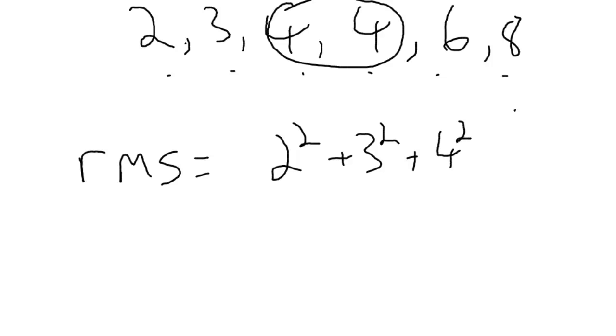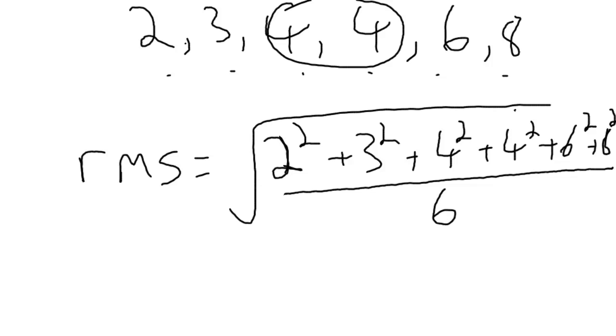So, 2 squared plus 3 squared plus 4 squared plus 4 squared plus 6 squared plus 8 squared. And then you divide by the number of values, so you add all those up. You add up all the squares, divide by the number, which is 6, and then take the square root. And if you do that, the root mean square of these values gives you 4.9.